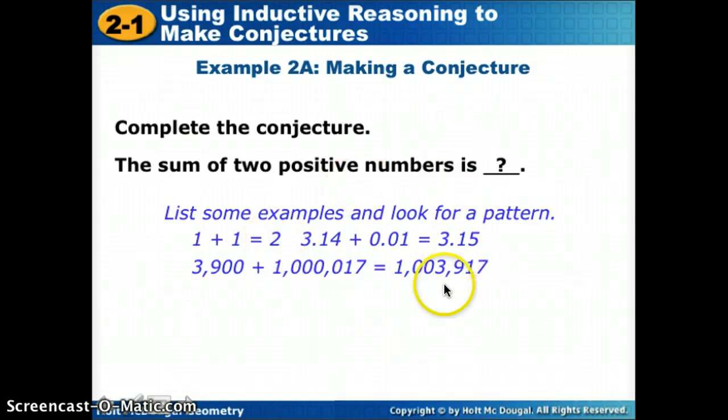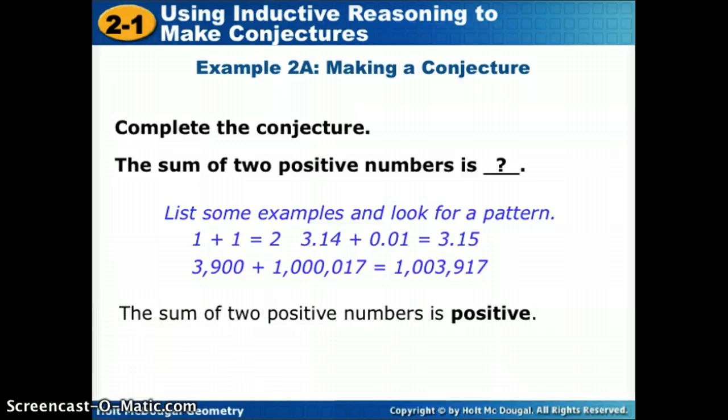Well, some of them are decimals, some have a lot of numbers, but I do see that they're all positive. So to complete my conjecture, I'm going to come up with a pattern. What do these three things have in common? They're all positive. So I can say that the sum of two positive numbers is positive.